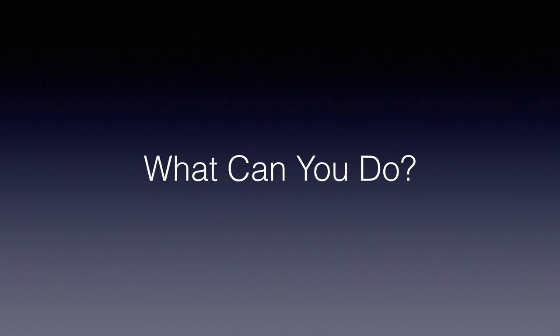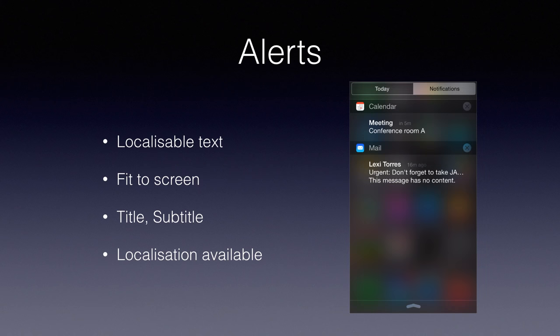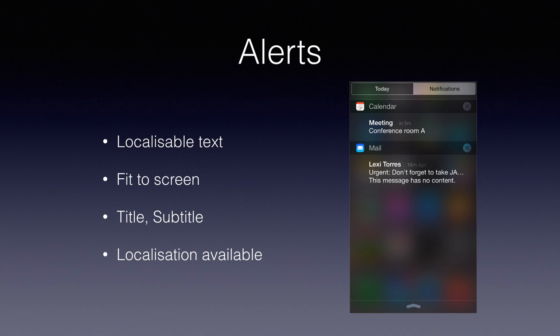What can you actually do with these notifications? Let's talk about the alert text. You can send localizable text down to the phone. There's no hard limit for the length of the string, but generally you have about 5 to 10 words before the operating system truncates it and the user might be left confused. There's a title and a subtitle. If you have localizations in your strings file, you can send these down — you can even send parameters, so 'X challenged Y in a game' will translate automatically.